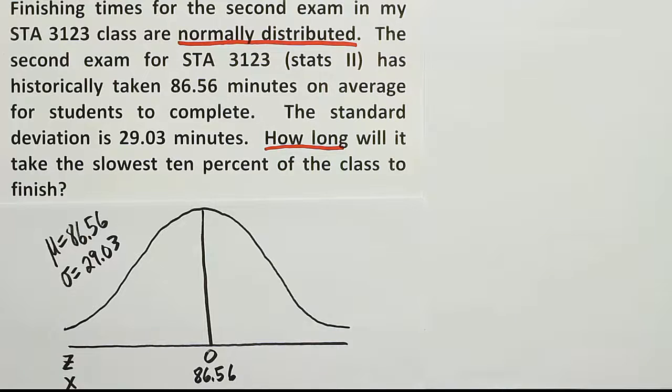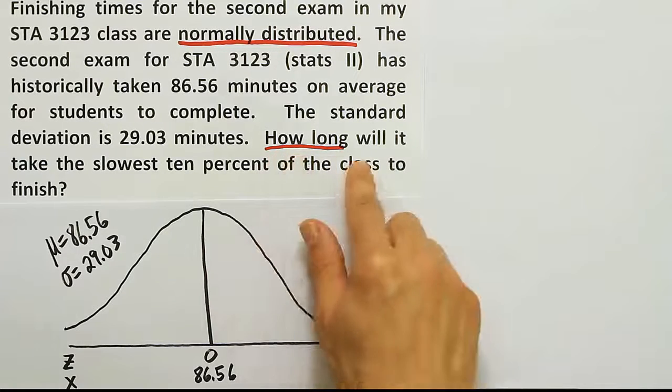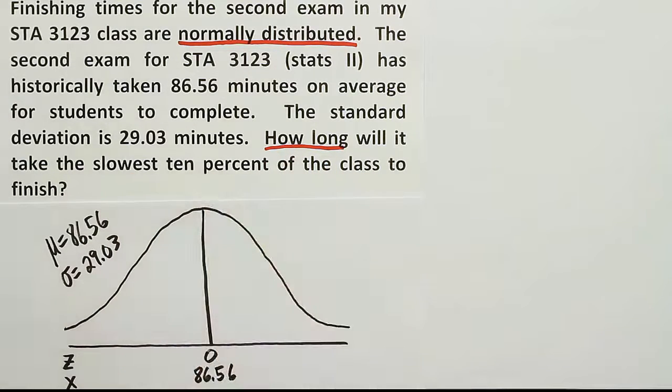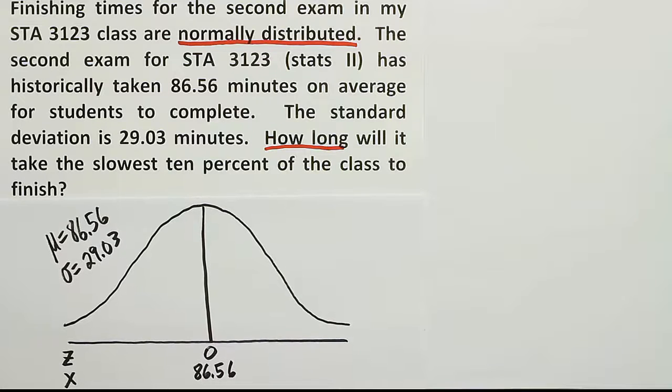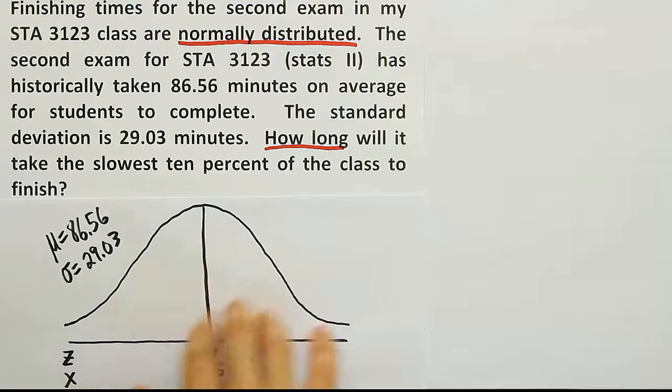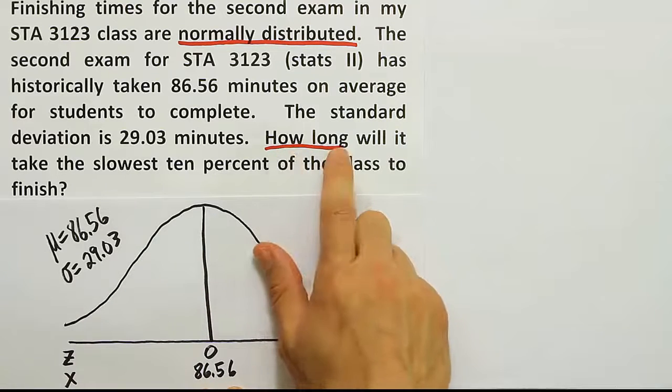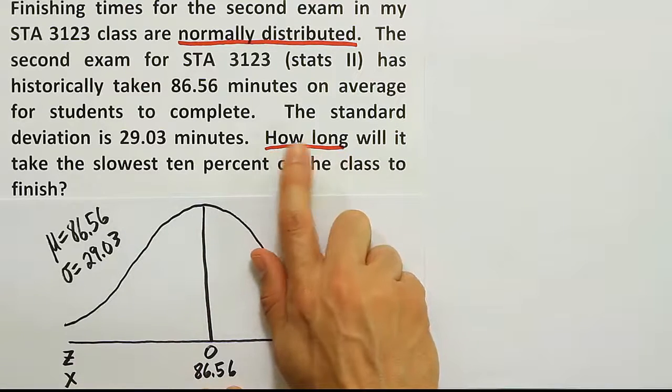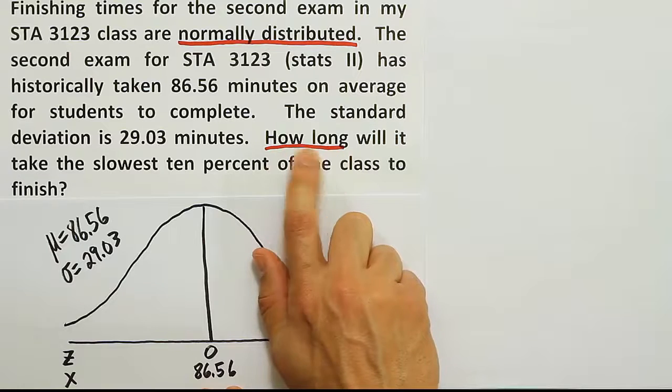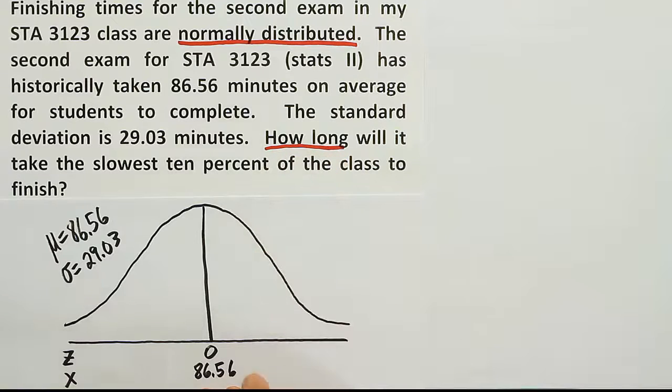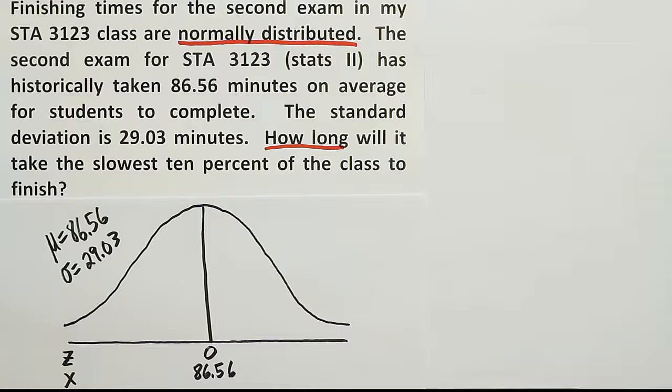From there, what I want to do is look at the next key phrase. It says, how long will it take the slowest 10% of the class to finish? So it asks us to find the probability in the problem. But this is a different kind of problem because it doesn't say find the probability. It says how long? So it's looking for a time. It's looking for a finishing time. That's the solution to the problem.